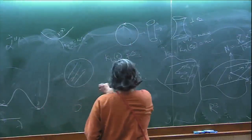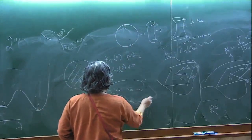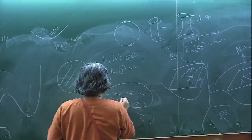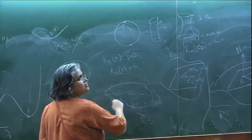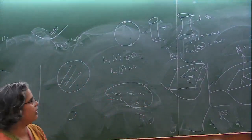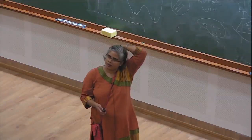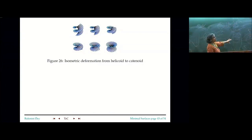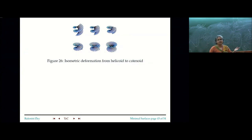There is a theorem that any genus surface with any number of punctures can be realized as a minimal surface. These are very deep theorems — it is a 250-year-old subject. It is a matter of immersing the surface into R³ such that K₁ + K₂ = 0 at every point, and there is a lot of theory that makes this much easier.